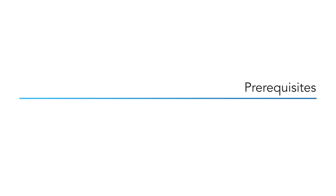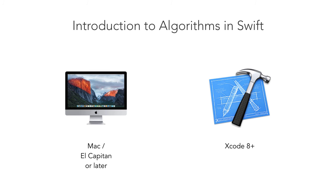This course is beginner friendly. Prior programming experience may be helpful, but you need not have actually worked with Swift itself. To implement the exercises in this course, you'll need a Mac with El Capitan or Sierra. El Capitan is required because Xcode 8 won't install on prior versions of macOS. You'll also need Xcode 8 or newer, which you can download for free from the Mac App Store.